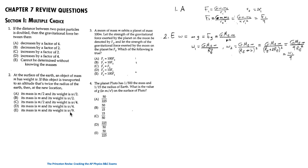Mass is an intrinsic property, so it does not change with location — this eliminates options A and C. The weight of an object equals m times gravitational acceleration, which equals the gravitational force: G·m_earth·m / r². At the surface, r equals the radius of the earth. At altitude h, the distance from the center is r_e + h.